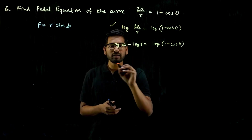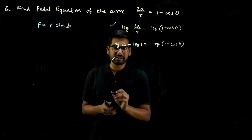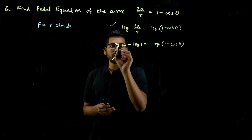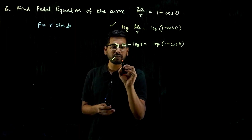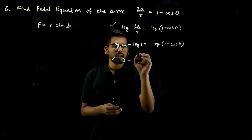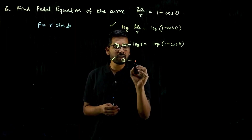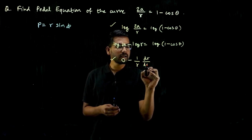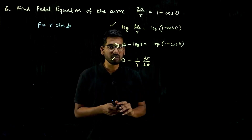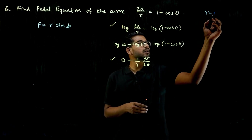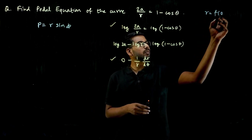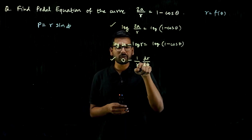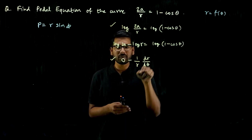The second step is to differentiate with respect to θ. log 2a is a constant, so its differentiation is 0. Minus: differentiation of log r is (1/r)(dr/dθ), because r is a function of θ, i.e., r = f(θ), so differentiation of r with respect to θ is dr/dθ, not 1.